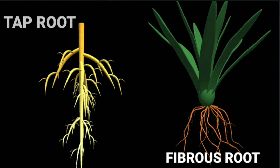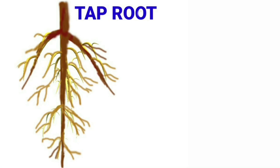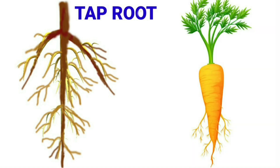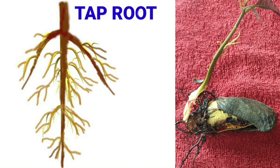What is a taproot? A single thick root that grows at the end of the stem with many smaller roots is called a taproot. Plants such as carrots and beans, and trees such as neem and mango have taproots.